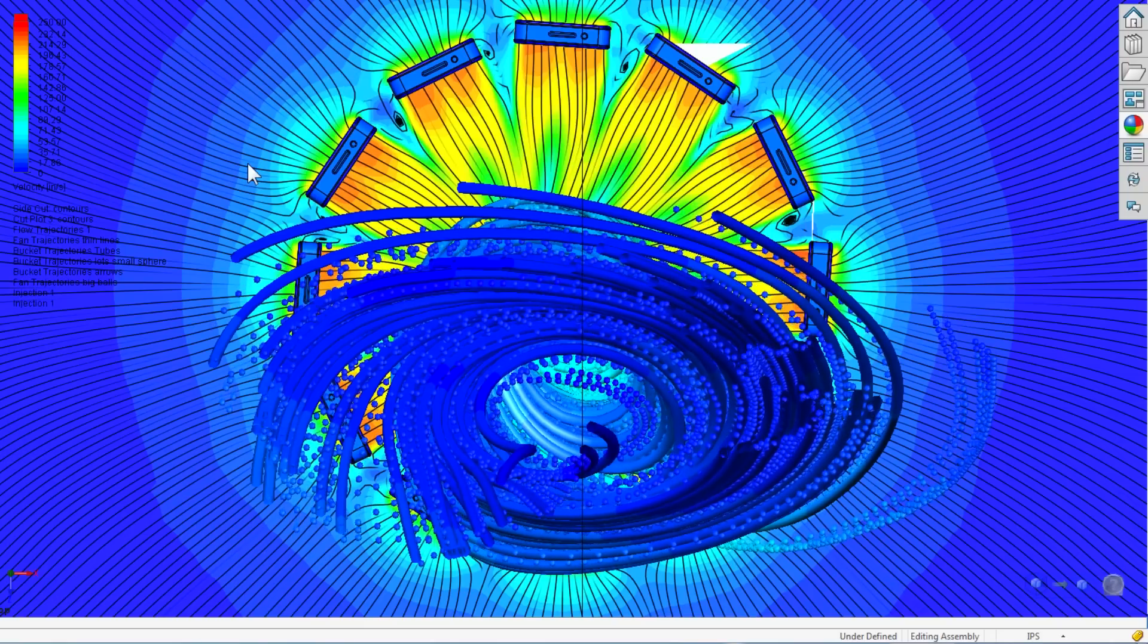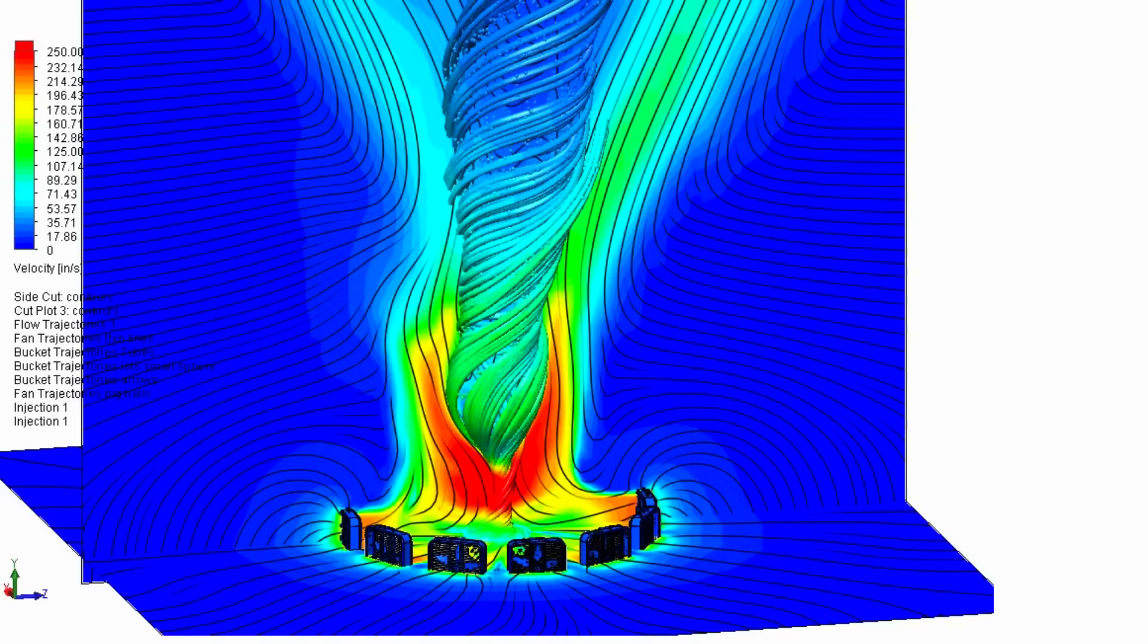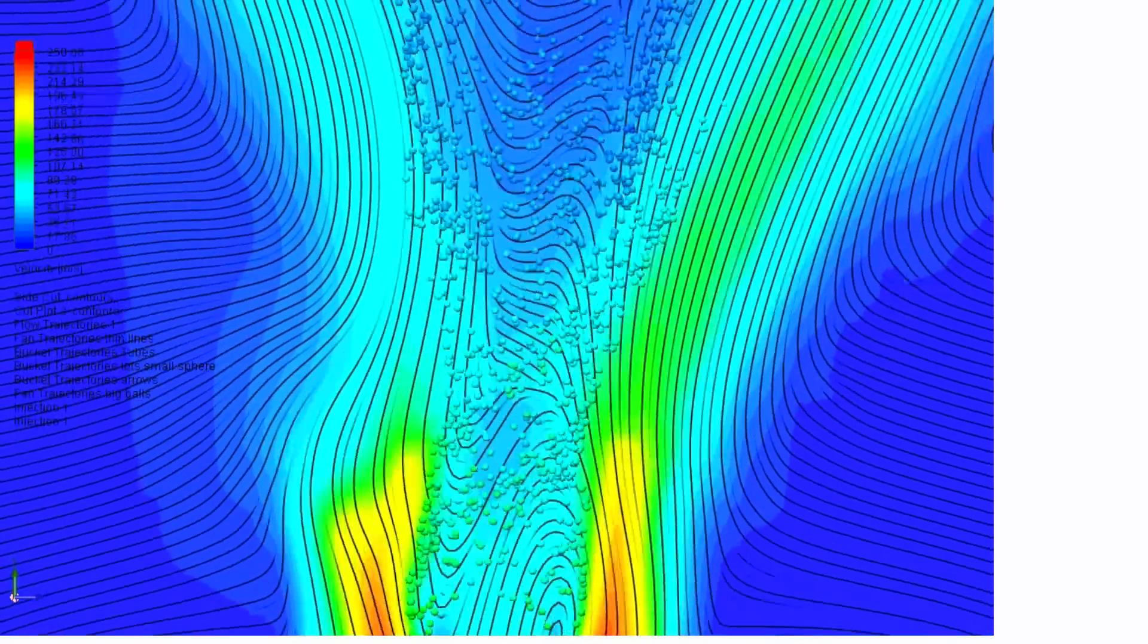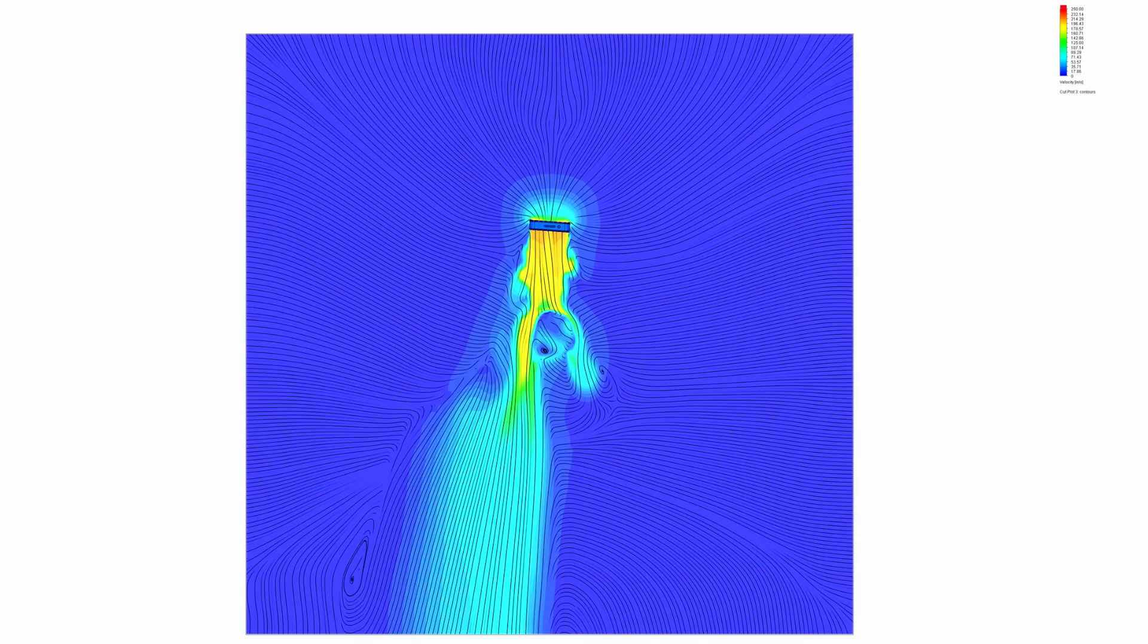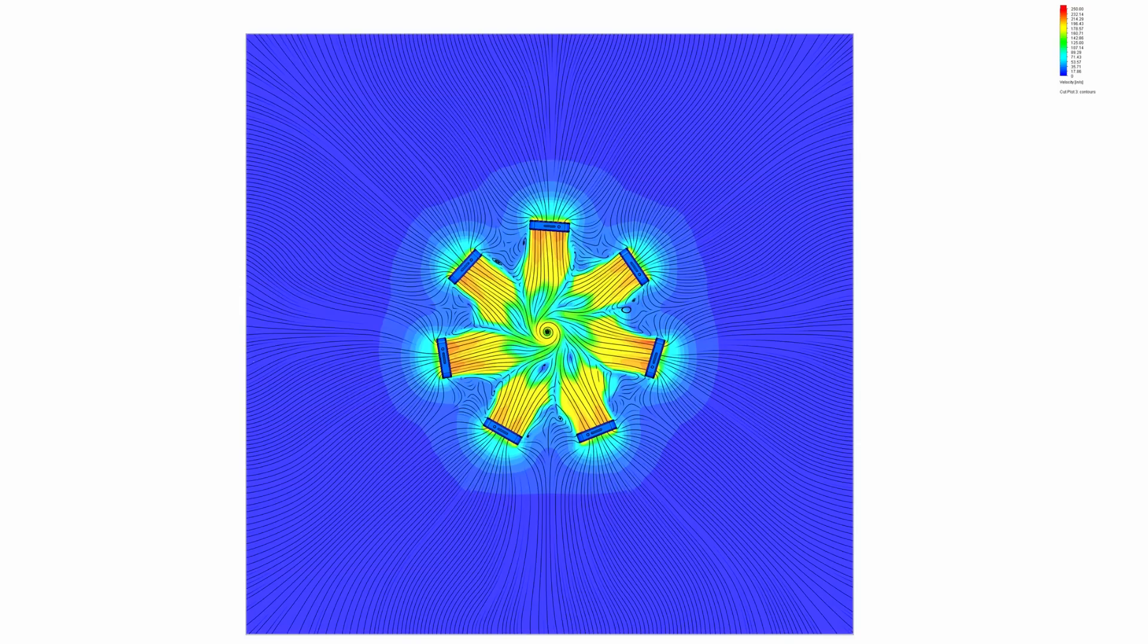So now that we understand we need about 86 degrees, how many fans do I need? The Slow-Mo Guys used 12 fans, but as I mentioned before, what if I want to get away with fewer? Let's set up another parametric study and evaluate anywhere from one to 12 fans and see what I need to create the vortex.